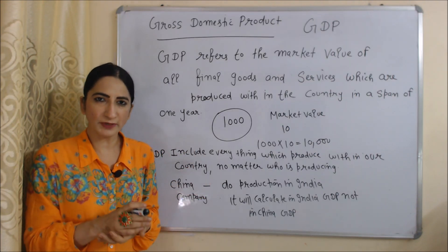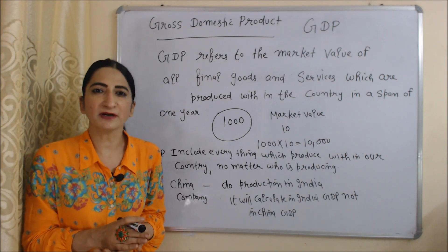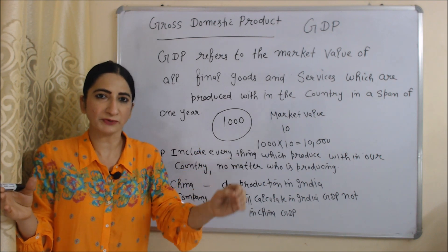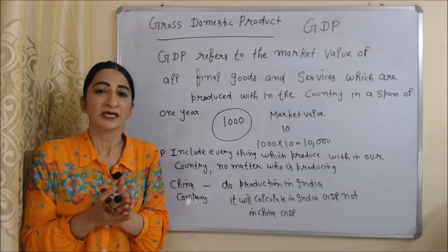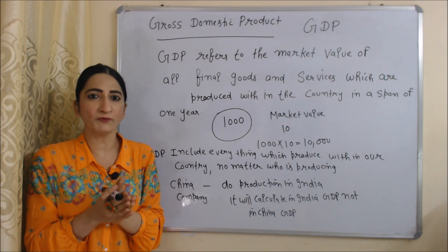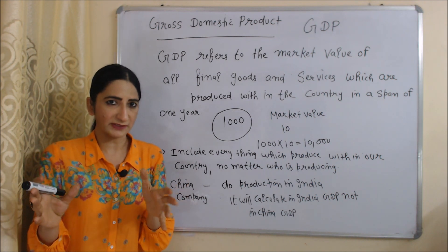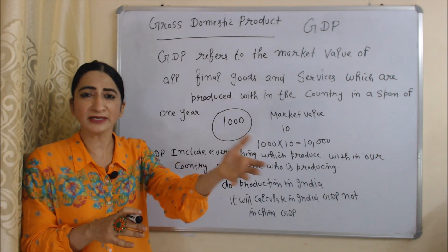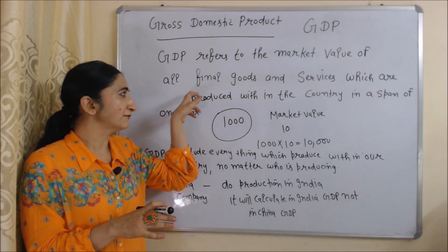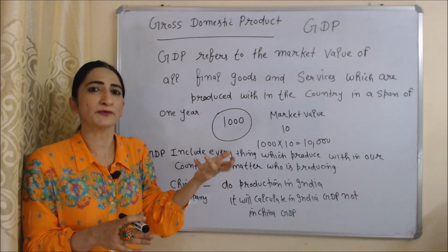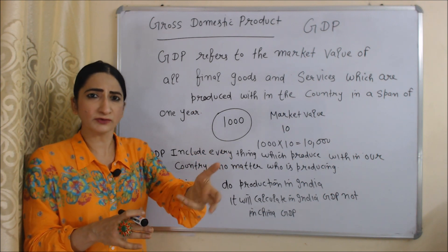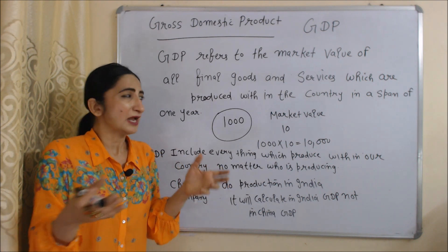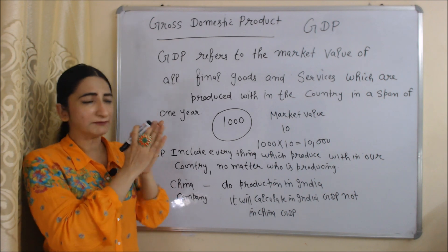First of all, we are going to talk about Gross Domestic Product — in short, GDP. GDP refers to the market value of all final goods and services which are produced within a country in a span of one year. Market value means the market price of these goods and services, and final goods means goods which are ready for the use of the end user — they don't require any further processing. For example: TV, AC, mobile, etc.